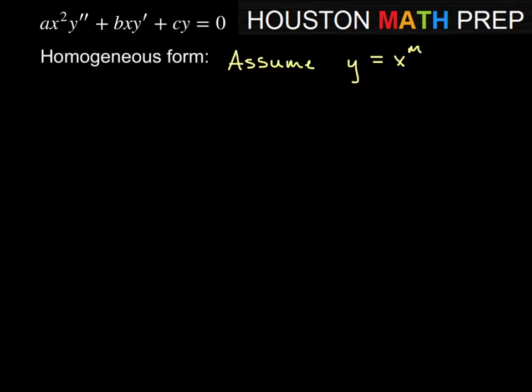So let's start by assuming that y equals x to the m to explore this idea of those being solutions. If that's true and I look at this equation, that gives me something to plug in for y, but I also have y prime and y double prime.